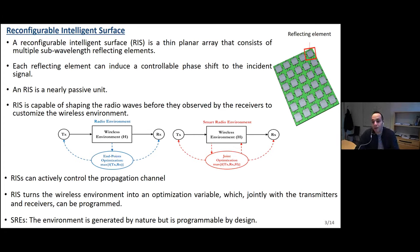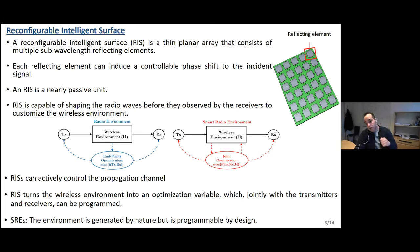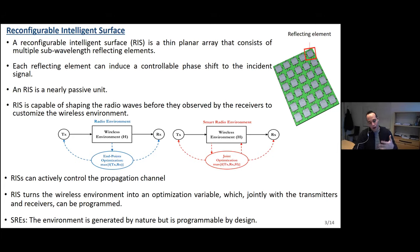A reconfigurable intelligent surface is a planar array that consists of multiple sub-wavelength reflecting elements. Each reflecting element is simply a small antenna that re-radiates the incident wave without any amplification. Each element is connected to a tunable chip, such as a PIN diode or varactor, and can induce an independent and controllable phase shift for the incident signal. RIS is very energy efficient as it doesn't consume power for transmission because it has no RF chain or power amplifier — it only depends on signal reflection.